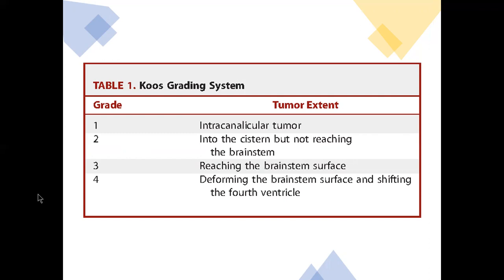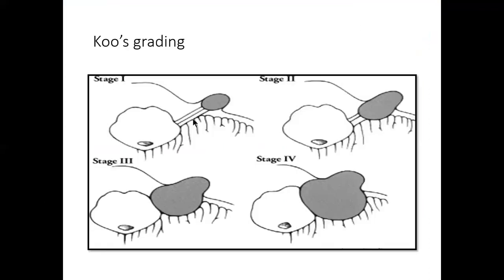You can see here: Stage 1 is intracanalicular. Stage 2 has a cisternal component. Grade 3 is touching the brainstem. Stage 4 is deforming the brainstem and obstructing CSF flow.